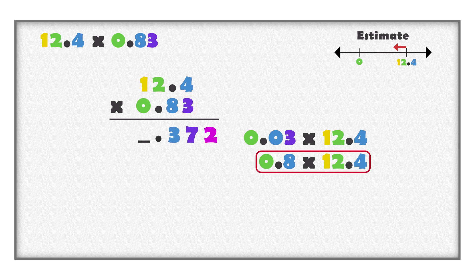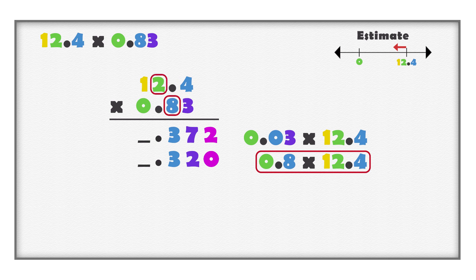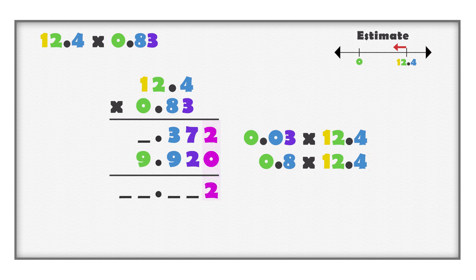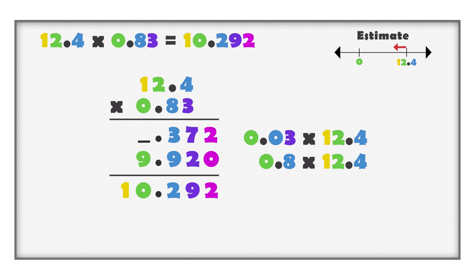Multiply 8 tenths with 12 and 4 tenths. When you multiply tenths with tenths, you get hundredths; there are no thousandths. 8 tenths multiplied with 4 tenths is 32 hundredths. When you multiply tenths with ones, you get tenths; 8 tenths multiplied with 2 is 16 tenths. We already have 3 tenths; 16 more makes a total of 19 tenths. A group of 10 tenths is 1; 19 tenths is the same as 1 and 9 tenths. When you multiply tenths with tens, you get ones; 8 tenths multiplied with 10 is 8. We already have 1; 8 more makes a total of 9. Add all of the values, remembering to add together digits of the same place value. The product is 10 and 292 thousandths.